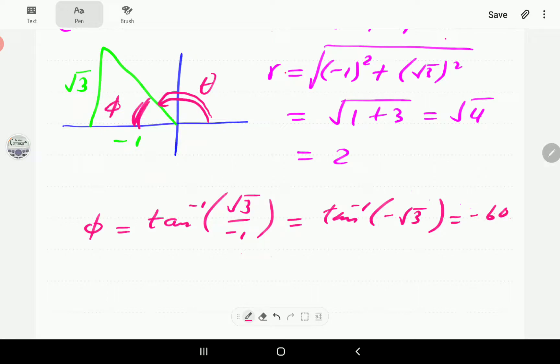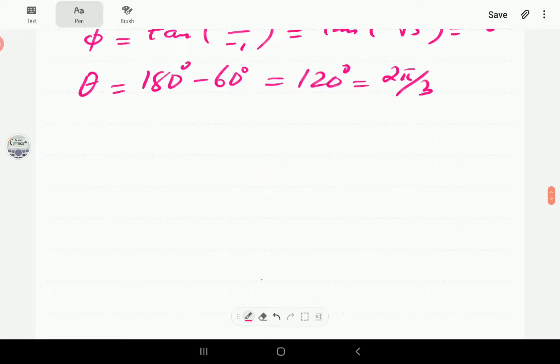So, negative 60. That's this angle here. Now, since there's a straight angle, that means a straight angle is 180. So, the angle you are looking for is this one. So it's going to be 120 degrees is 2 pi on 3. In radians, so we've got R and we've got theta, that means we can write this complex number in polar form.